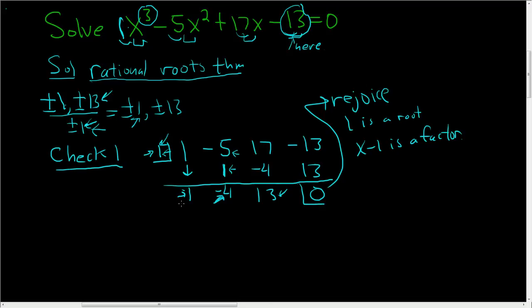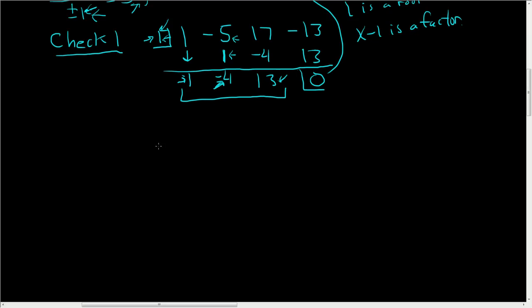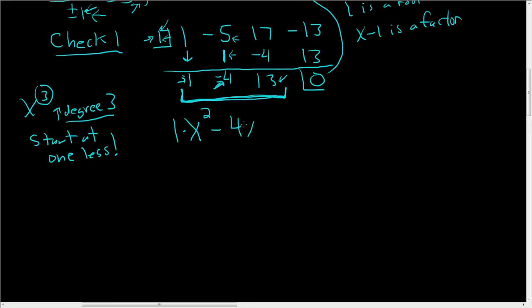So the next thing that people usually do is they use this to write down another equation. So we're skipping a lot of steps here, but that's okay. To write this down, what you do is you look at the degree of the original equation. So the original equation had an x cubed, and 3 was the biggest number, so it was degree 3. So then you start at 1 less. So this will be 1 times x squared, because that's 1 less than 3, minus 4x plus 13 equals 0.